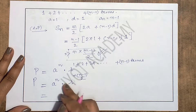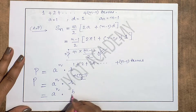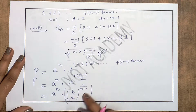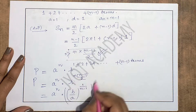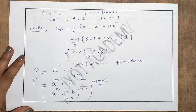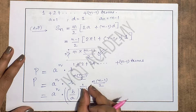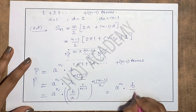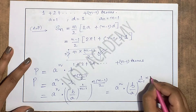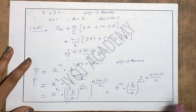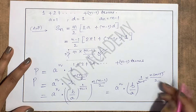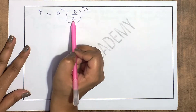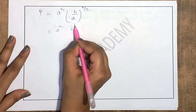Substituting the value of r back, we get P = a^n · (b/a)^(1/(n-1)) raised to the power n(n-1)/2. In the exponent of (b/a), the (1/(n-1)) multiplied by n(n-1)/2 gives: (n-1) cancels, leaving the power as n/2. So we get P = a^n · (b/a)^(n/2).